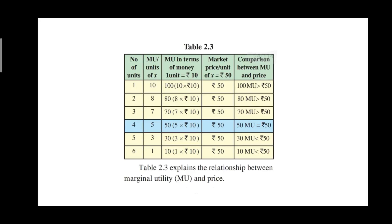For the first unit, marginal utility in money terms is rupees 100, but the market price is only rupees 50. Since 100 is greater than 50, a rational consumer will definitely buy it. For the second unit, MU in money is rupees 80, which is still greater than the market price of rupees 50 — so the rational consumer buys again. For the third unit, MU in money is rupees 70, still greater than rupees 50, so the consumer buys.